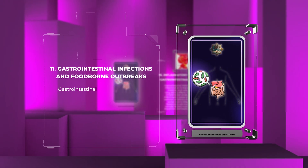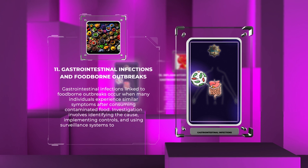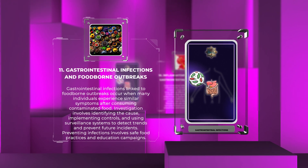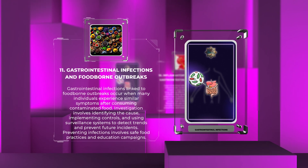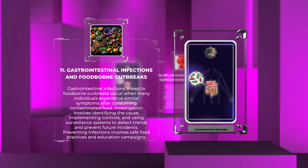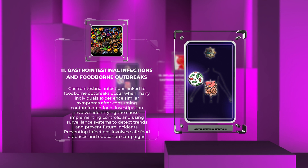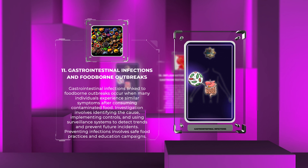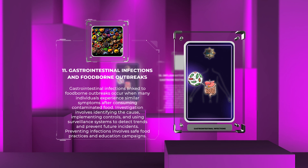Gastrointestinal infections linked to foodborne outbreaks occur when many individuals experience similar symptoms after consuming contaminated food. Investigation involves identifying the cause, implementing controls, and using surveillance systems to detect trends and prevent future incidents. Preventing infections involves safe food practices and education campaigns.